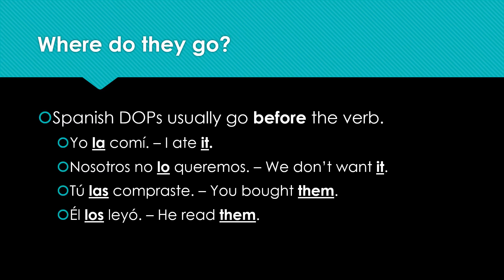Now, where do they go? This is the other funny thing about Spanish DOPs — they usually go before the verb. In the sentence I ate it, you would say yo la comí. The la, meaning it, goes before the verb. In the sentence we don't want it, nosotros no lo queremos, the lo goes directly before the verb, between no and the verb, and it means we don't want it.